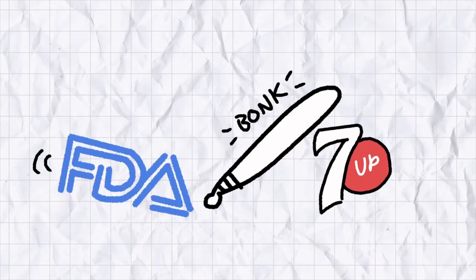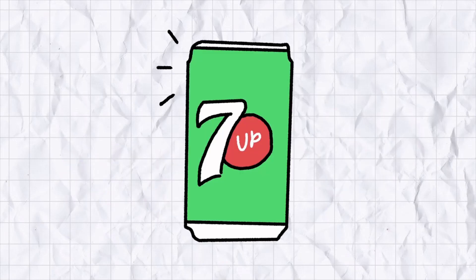The FDA banned the addition of lithium salts to food and drink in the 1940s, and 7-Up has been free of it ever since. Still got the corn syrup, caffeine, and artificial sweeteners, but baby steps, eh?